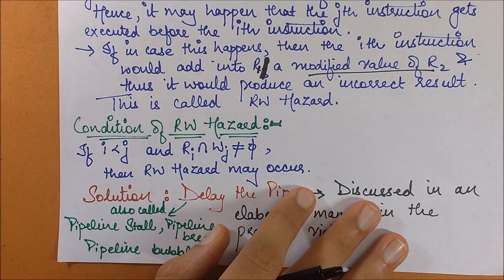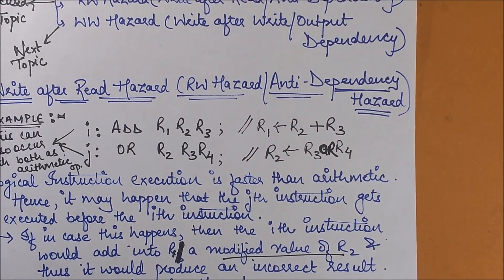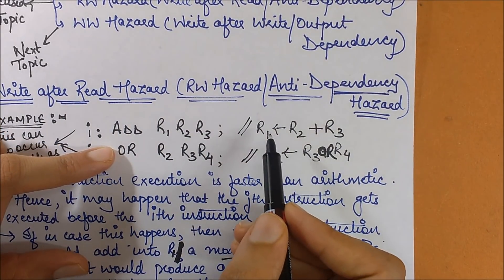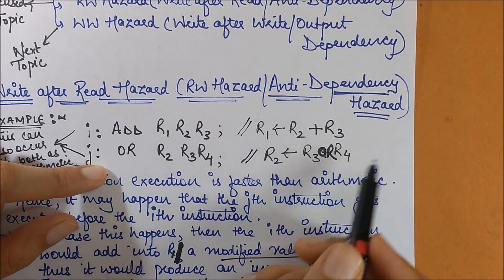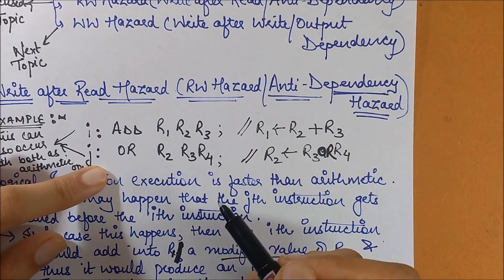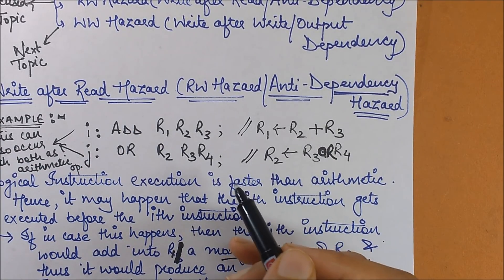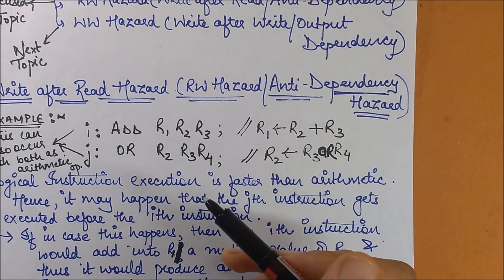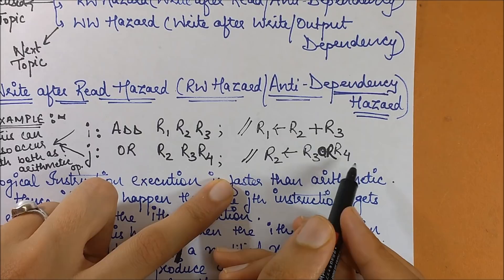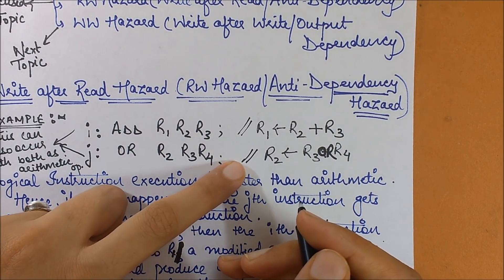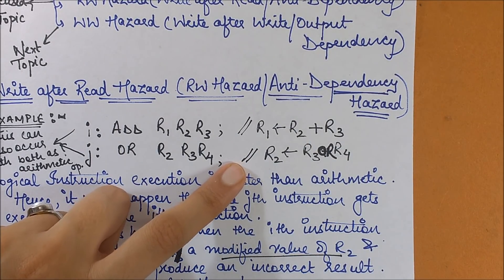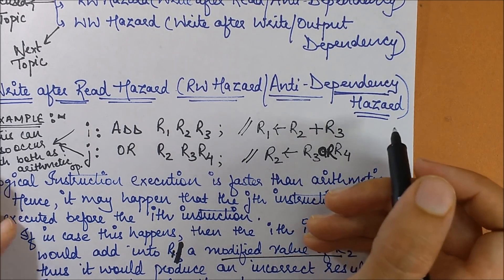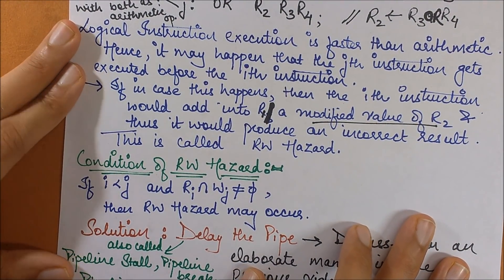Why is it called an anti-dependency hazard? Looking at the example: the first operation was performing a read, which is independent of other instructions. The second operation was performing a write, which is generally considered an independent operation because you are updating the value of the data item. If some other instruction reads this updated value after the update, that would be a dependency — but here the write itself is independent. So it is an anti-dependency hazard because there was no actual dependency, but since the order changed it somehow became one.